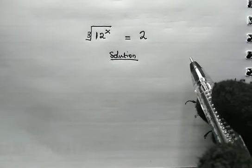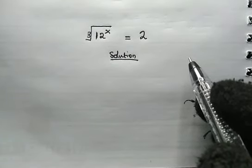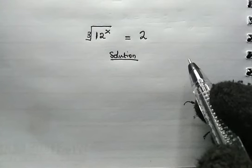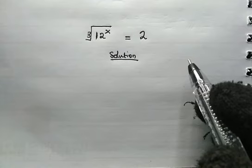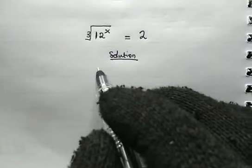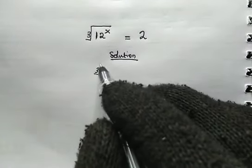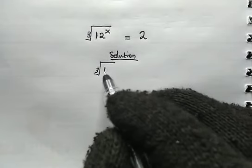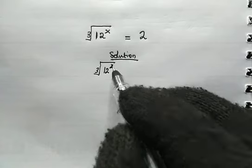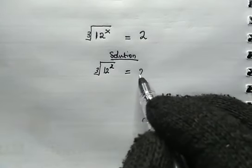Hello, welcome back once again. Today we're going to solve for the value of x in the following exponential equation. We have the cube root of 12 to the power of x. This is equal to 2.